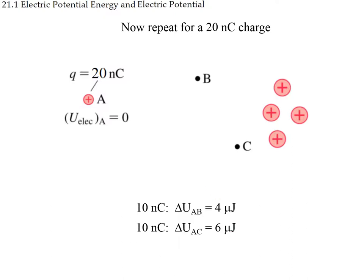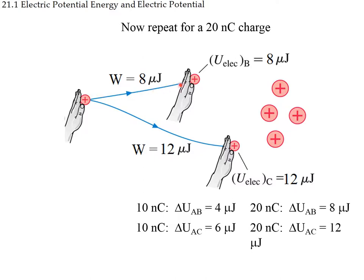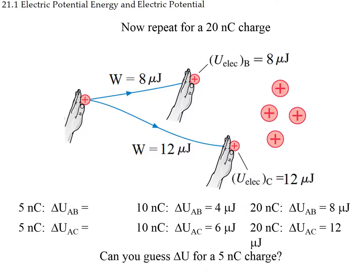We're doubling the charge, so we're doubling the work. For 10 nanocoulombs going from A to B, the final potential energy is 4; for 20 nanocoulombs it is 8 — proportional to the charge. So for a 5 nanocoulomb charge, which is half of 10, the potential energy would be half: 2 microjoules going to B and 3 microjoules going to C.